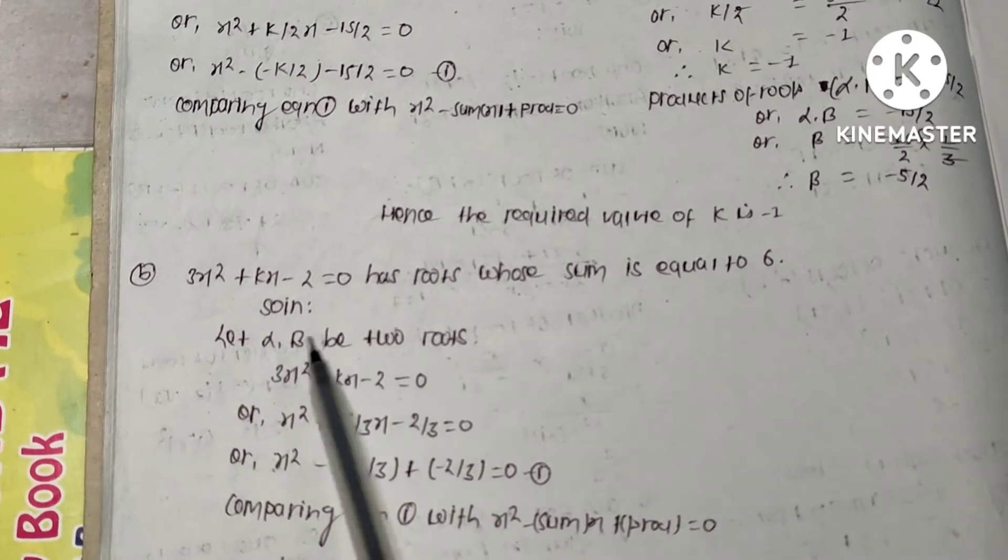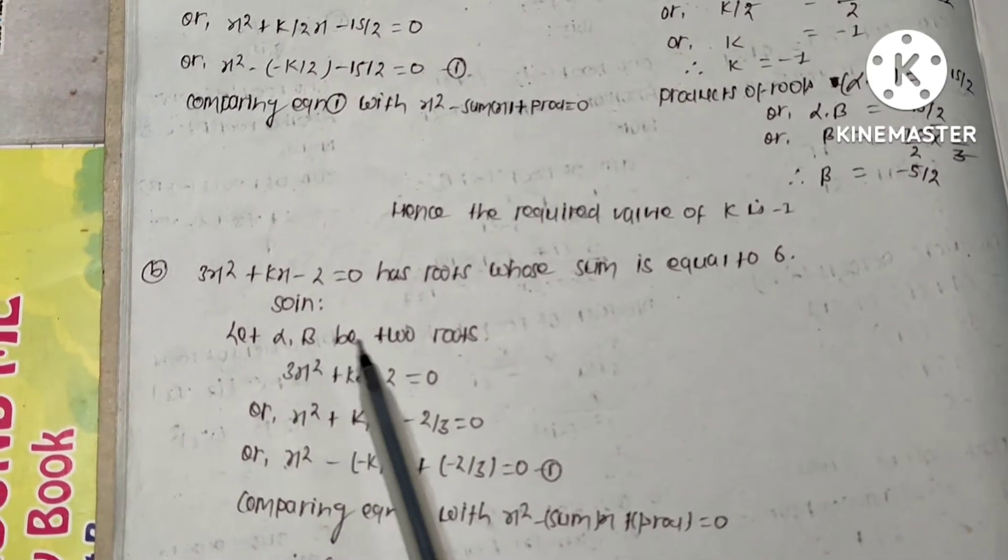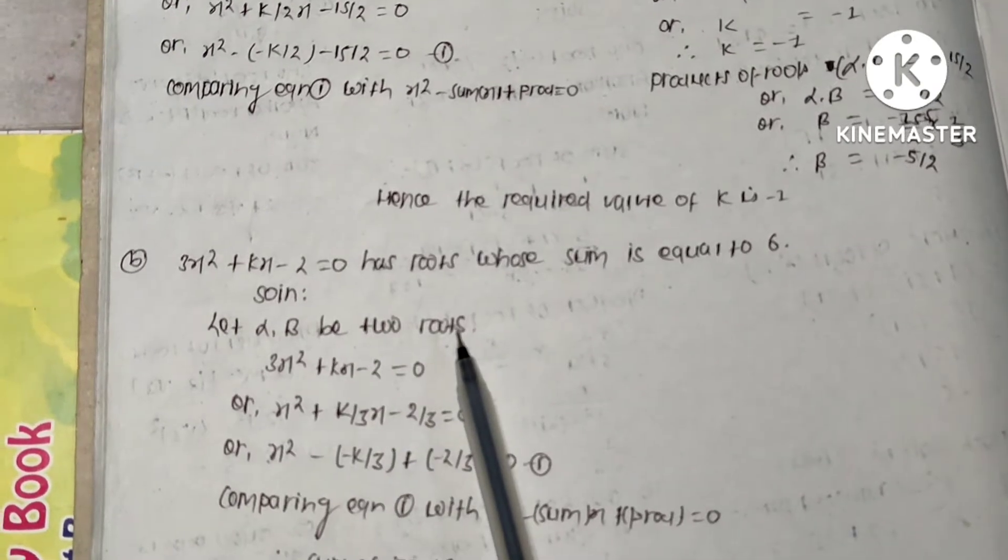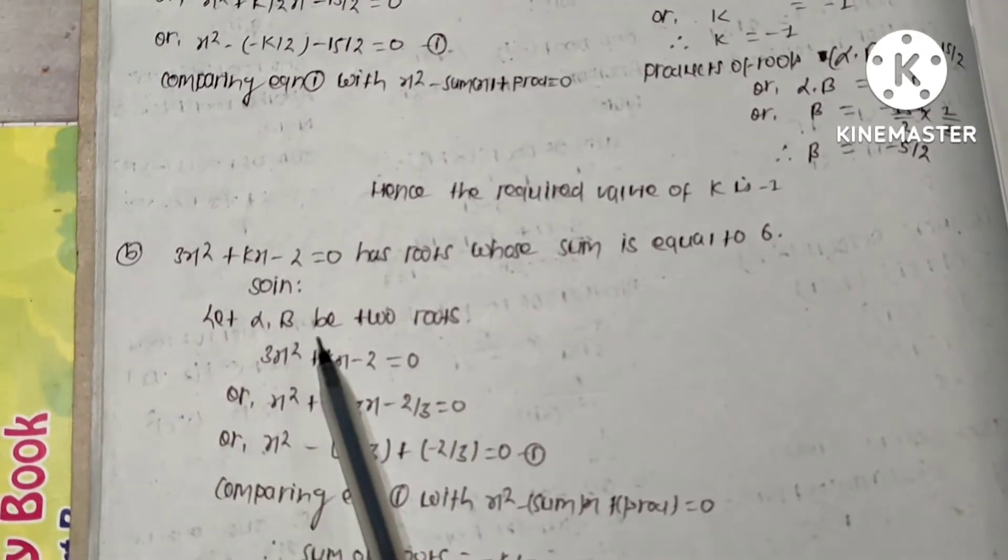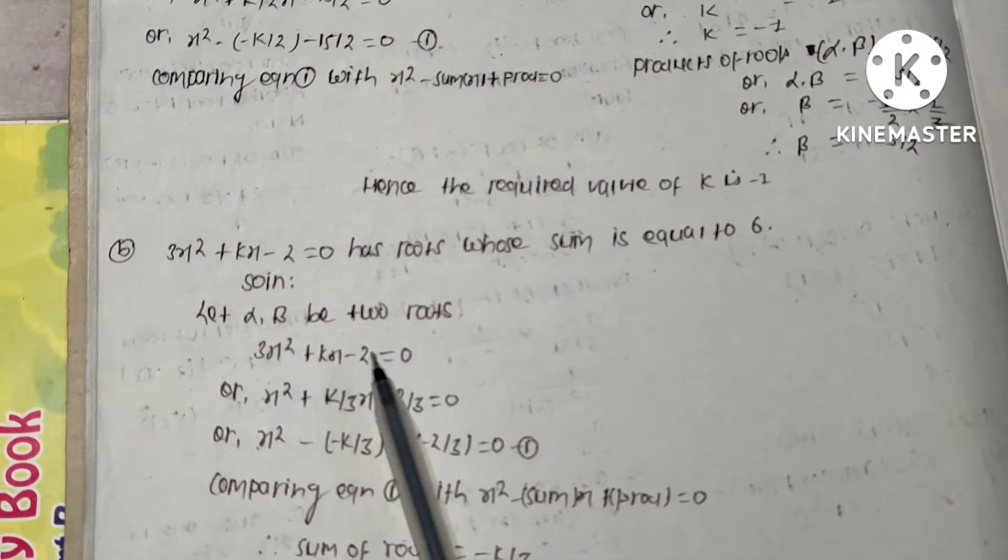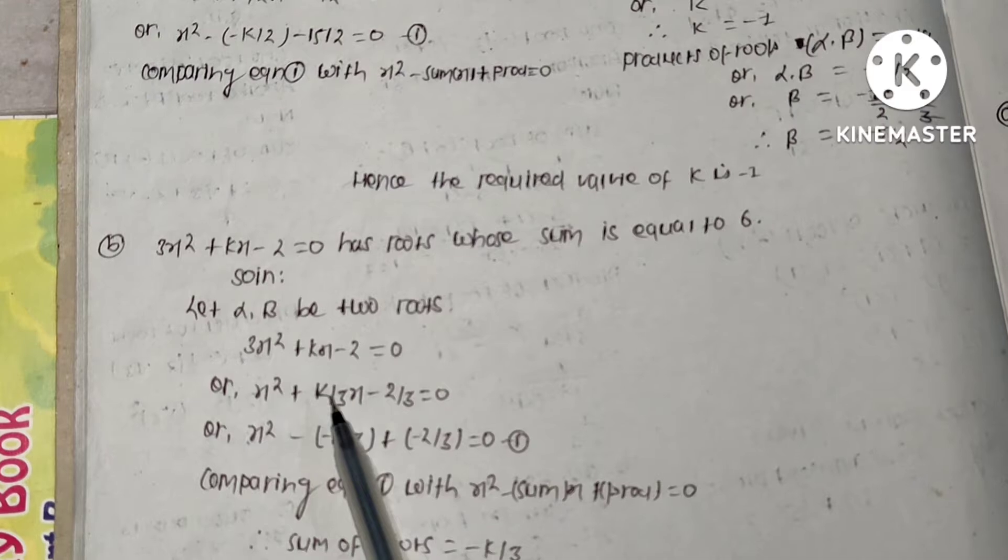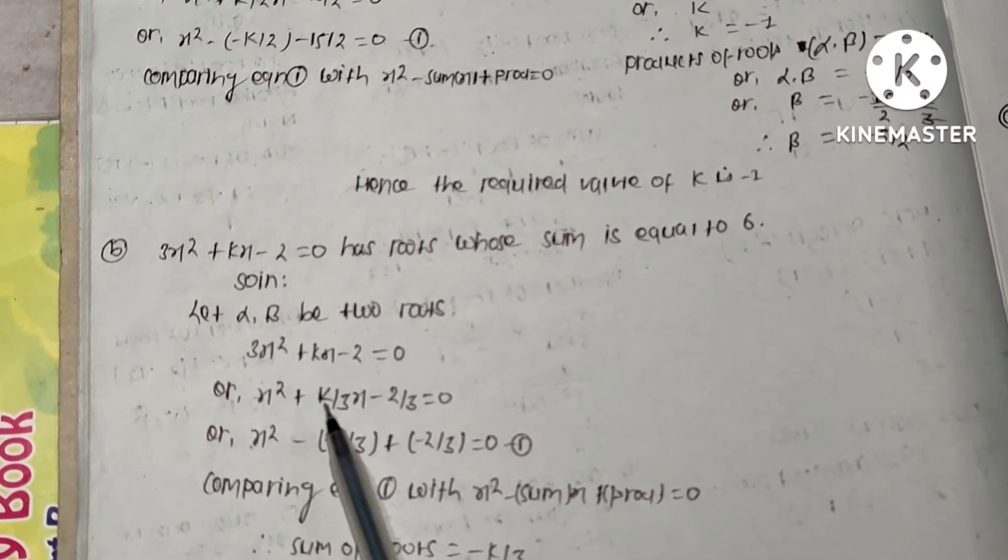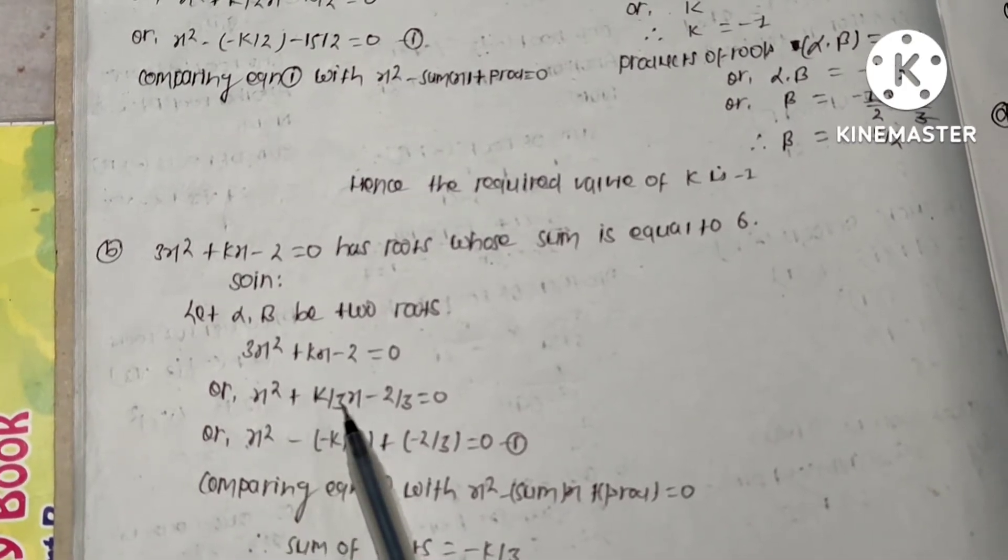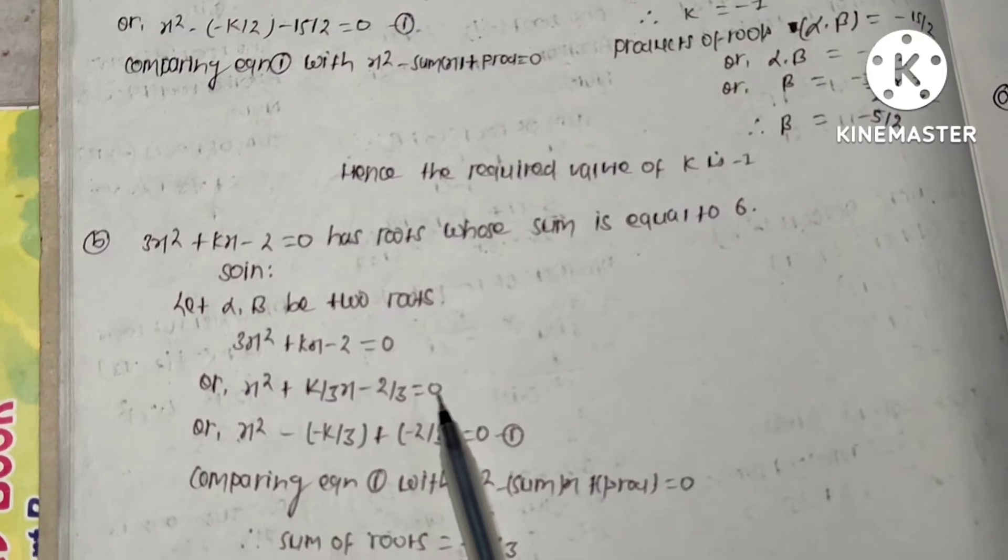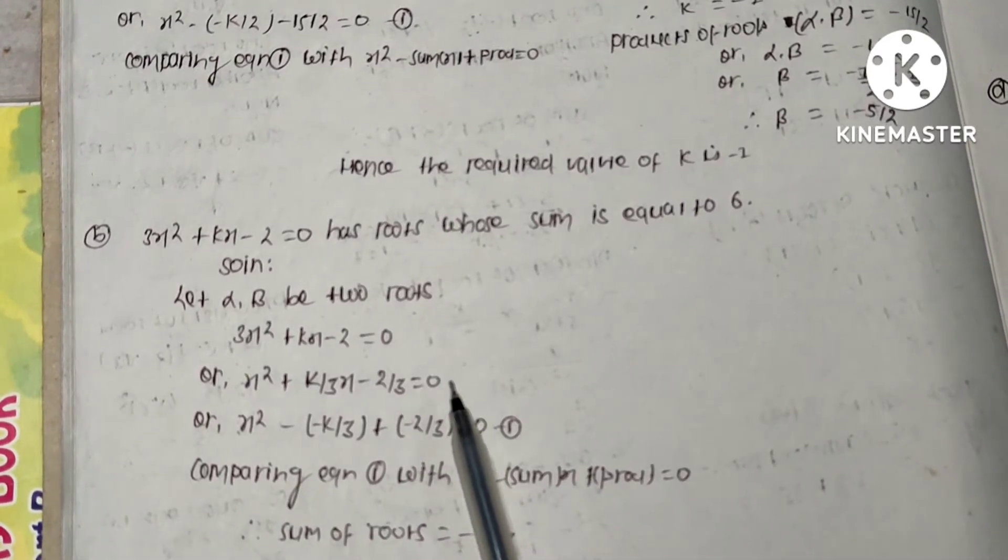Let alpha and beta be the two roots. Then write the given equation: 3x² + kx - 2 = 0. Divide this equation by 3, then the equation becomes x² + (k/3)x - 2/3 = 0.